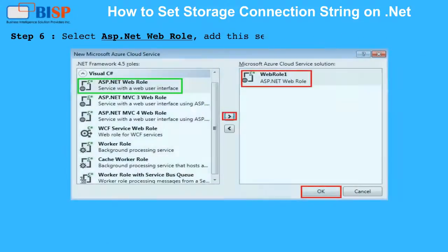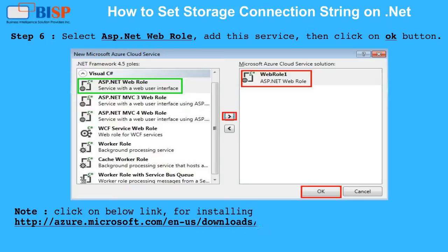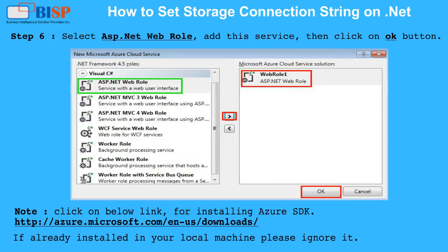Step 6: Select ASP.NET web role, add this service, then click the OK button. Note: Click on the link below for installing the Azure SDK. If it is already installed on your local machine, please ignore it.